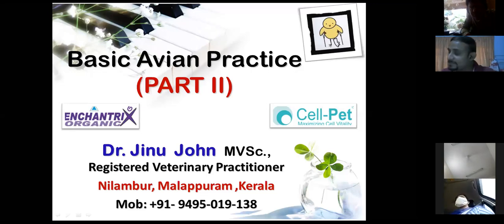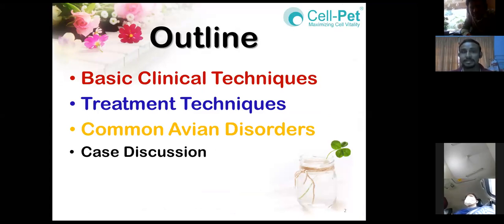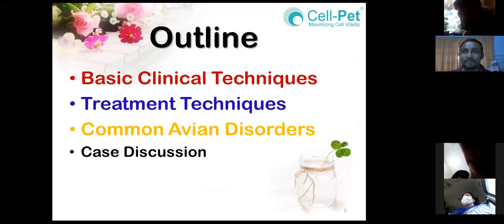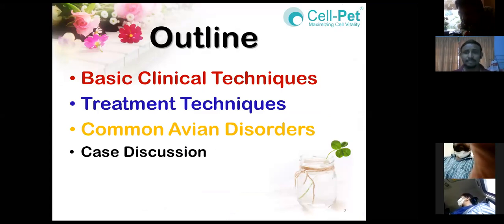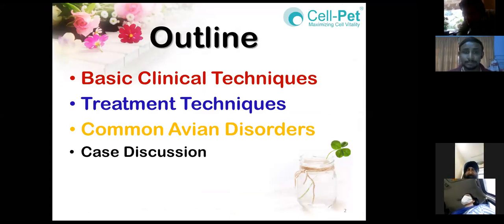So we will start with the presentation. The outline includes basic clinical techniques as an avian veterinarian — what clinical techniques to follow in your clinic, what the normal treatment techniques are, something very different from mammals that I will share, and the very common avian disorders. Avian disease is a very broad subject; it's not possible to cover in one hour, so I'll focus on very common disorders I've personally come across, with photographs, and if time permits, a case discussion.